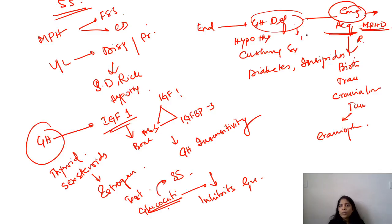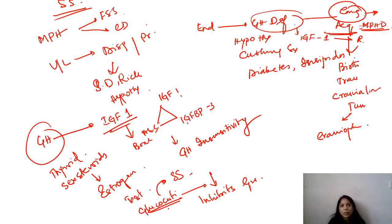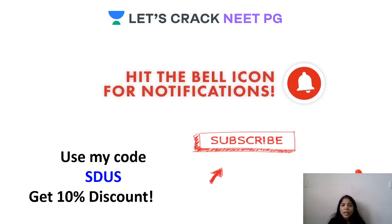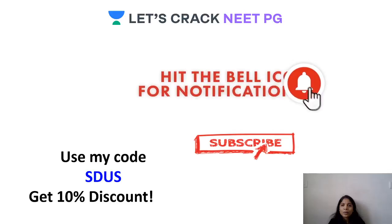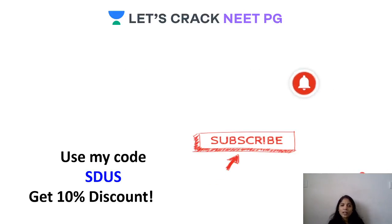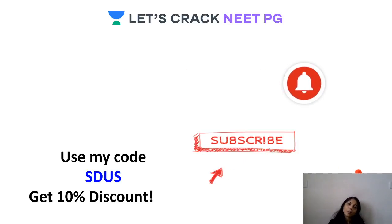Deficiency of IGF-1 can lead to Laron syndrome. In the next class, I will discuss genetic causes of short stature and skeletal dysplasias, followed by a quiz. Remember to use my code SDUS and subscribe to the OneAcademy subscription. If there is anything in detail you want me to discuss, please add it in the comment section — I will get back to you. Thank you.